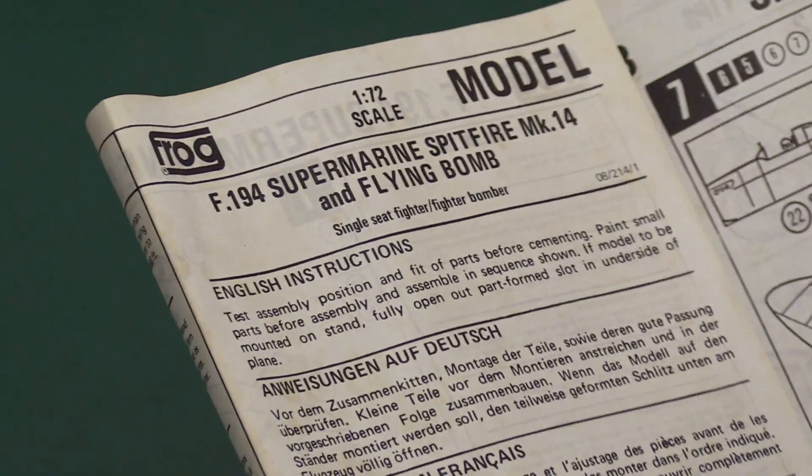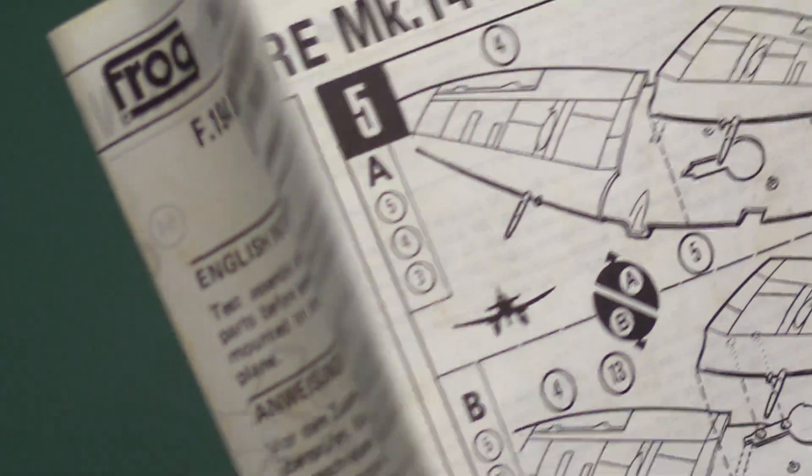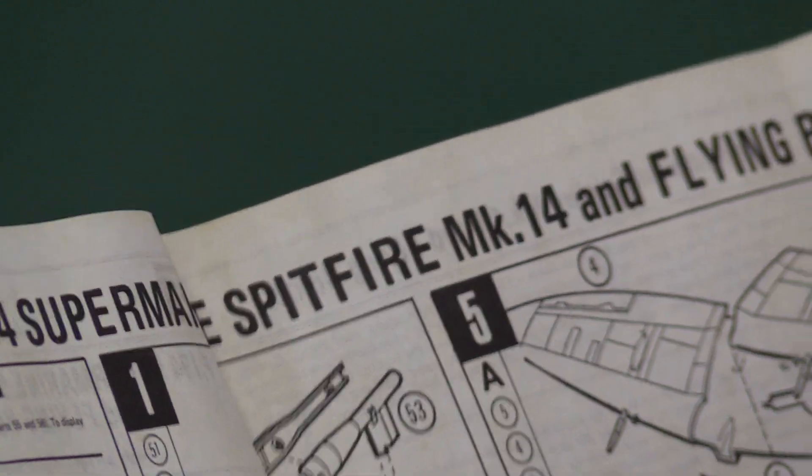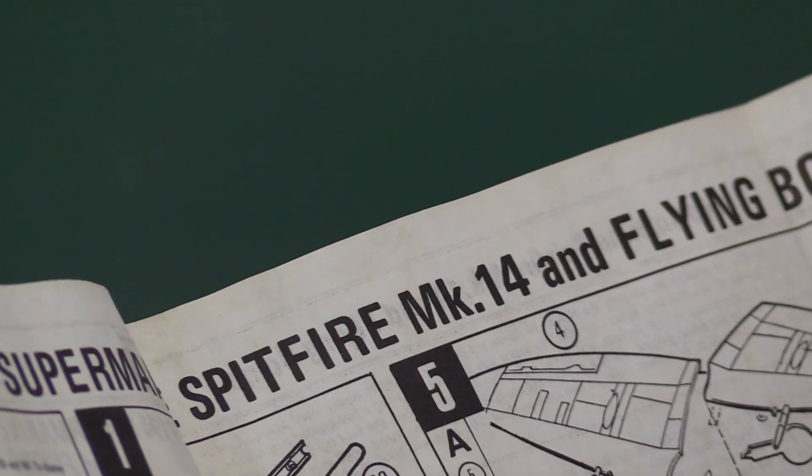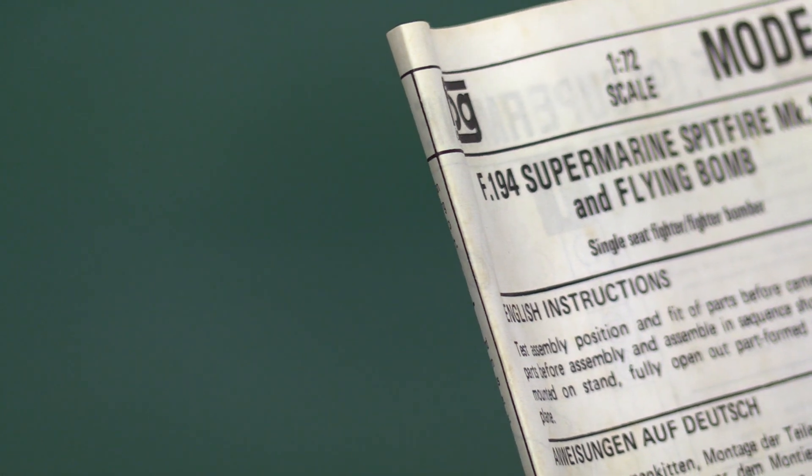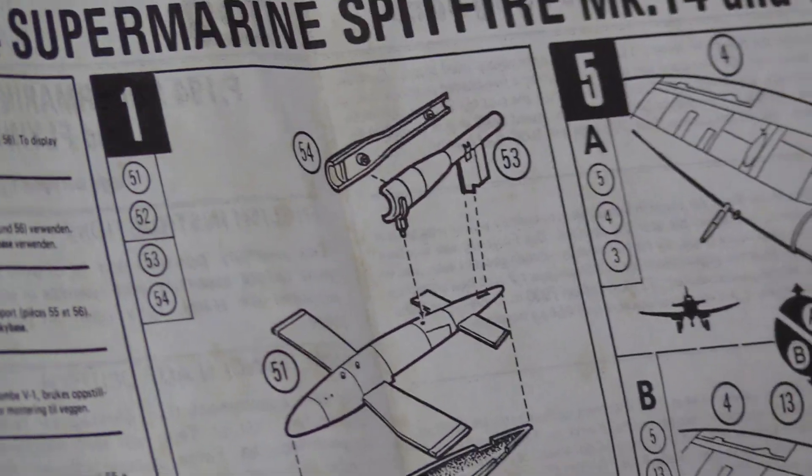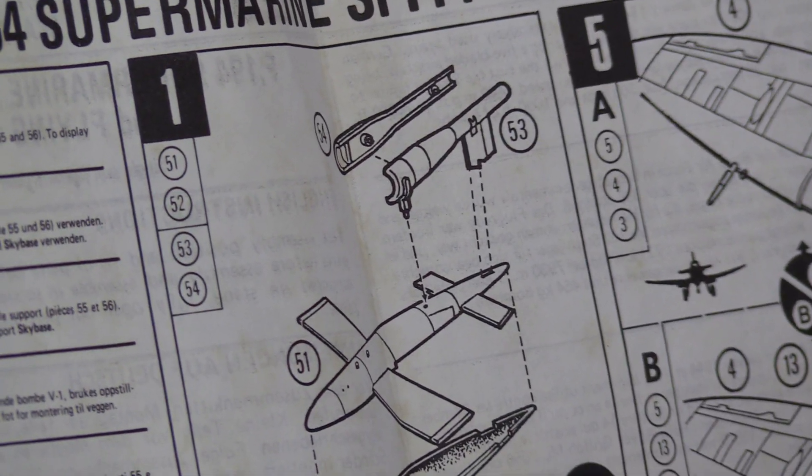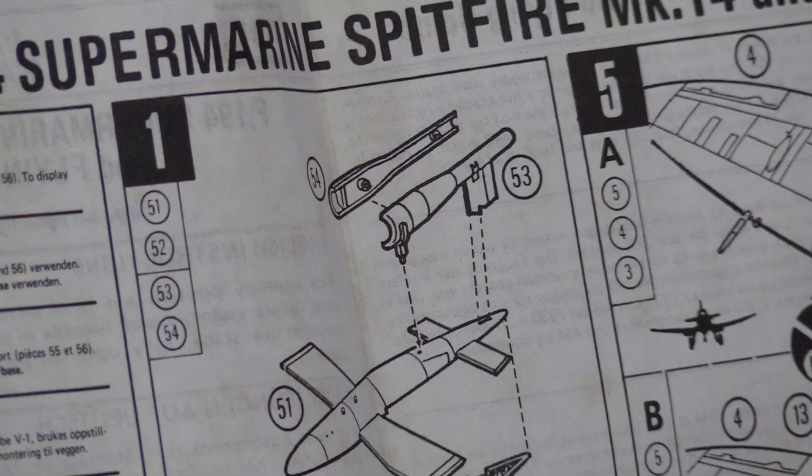I'm just checking again for a date. No, there's no date. I'm guessing it's 73, 74-ish. Anyway, here we go. V1 Flying Bomb first, it comes in just four parts, very straightforward to assemble.